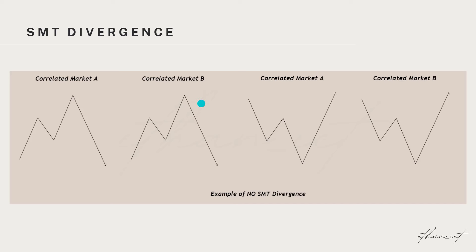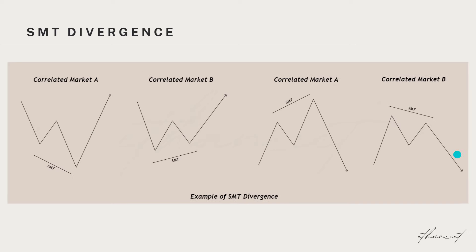Vice versa, when correlated market A makes a lower low, correlated market B should also make a lower low. In this case, there is no SMT Divergence because they both are doing what they're supposed to do.